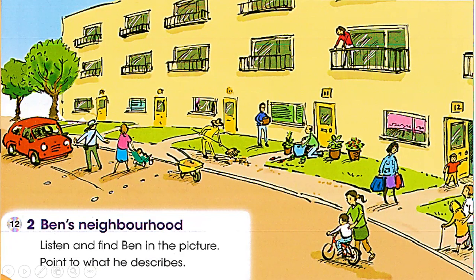Look at this girl — she's Ben's cousin, and she's helping this boy learn how to ride a bicycle. Look at this nurse; she's helping the old woman, and she is Ben's aunt. Ben has opened the door for his aunt. This is apartment number 12 in the building. Look at this woman standing on the balcony.